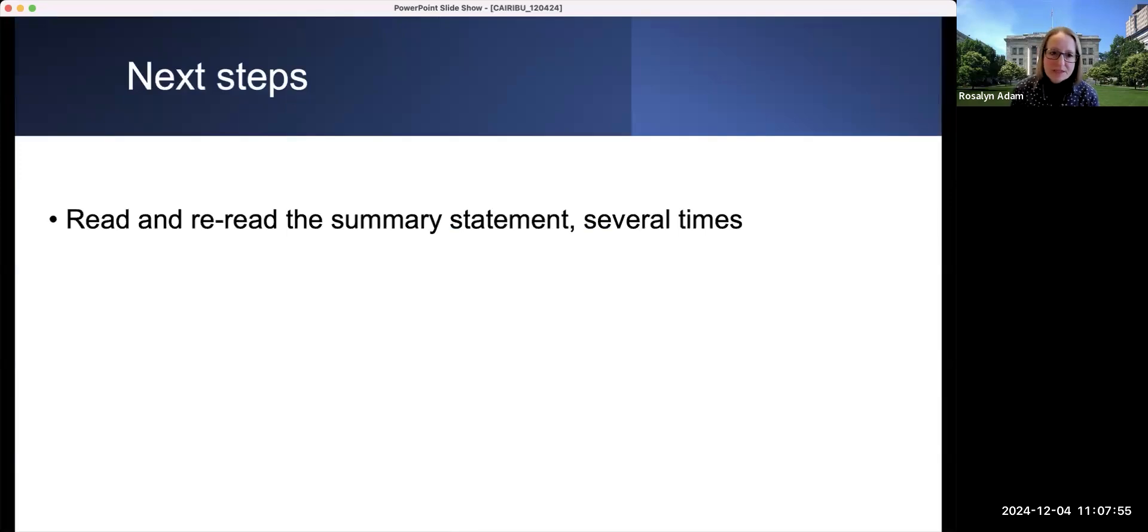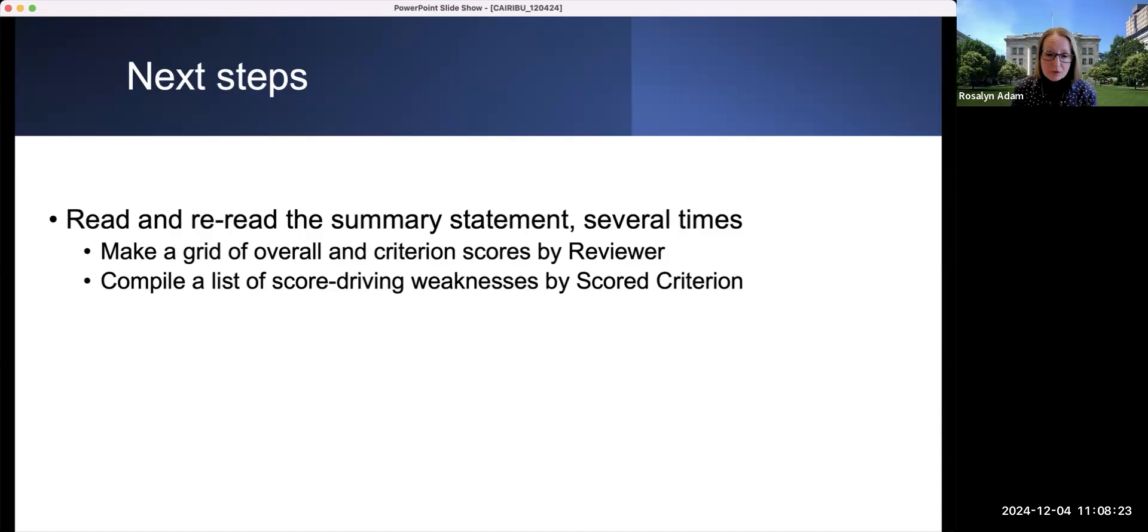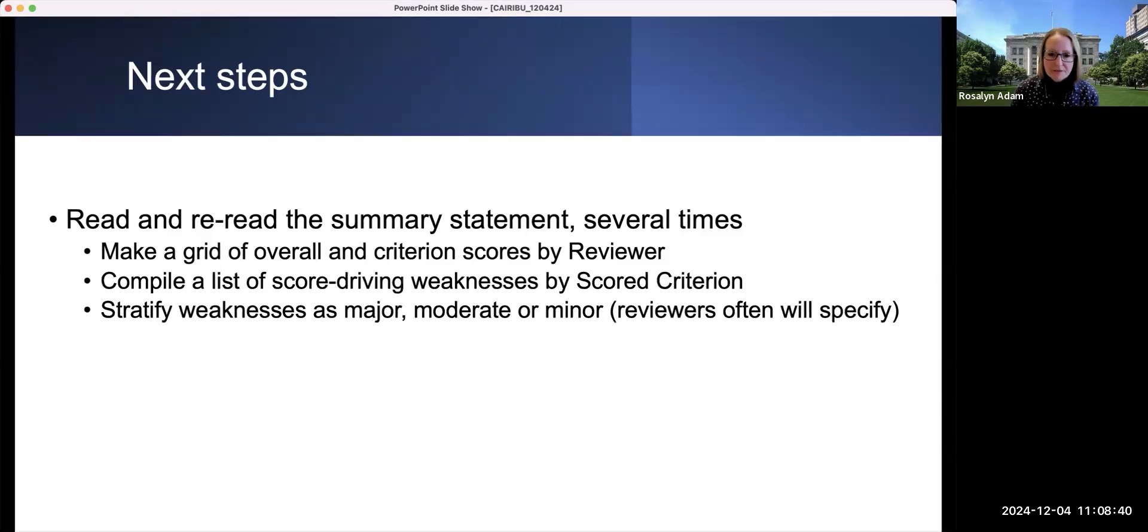So to help you make this decision, it's important to read and reread the summary statement and do this several times. One practical suggestion is to make a grid of the overall and the criterion scores for each reviewer. And this will allow you to see the criteria that really drove the scores overall. For each reviewer, you can compile a list of the score driving weaknesses by each of the scored criteria. And then stratify those weaknesses as either major, moderate, or minor. And reviewers, good reviewers particularly, will often specify the weight that they attach to each of these weaknesses.